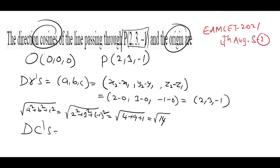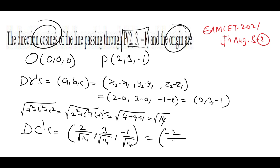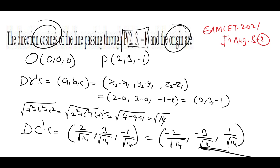Therefore the direction cosines are DC = (2/√14, 3/√14, −1/√14). These are the direction cosines of the line through the given points.